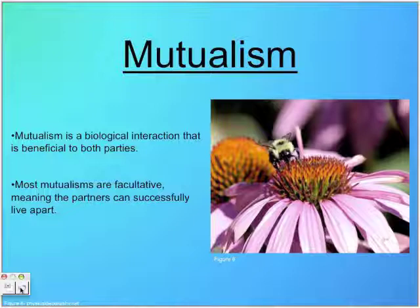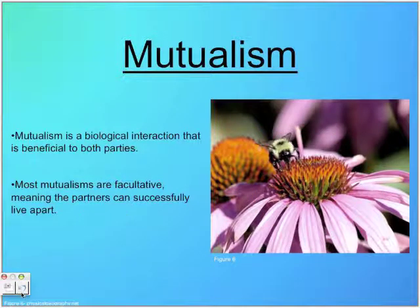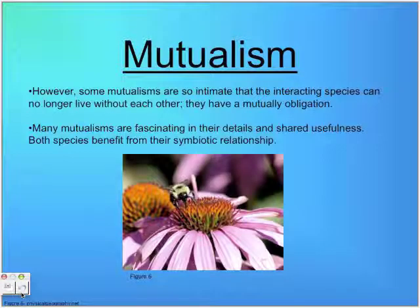Most mutualisms are facultative, meaning the partners can successfully live apart. However, some mutualisms are so intimate that the interacting species can no longer live without each other — they have a mutual obligation. Many mutualisms are fascinating in their details and shared usefulness. Both species benefit from their symbiotic relationship.